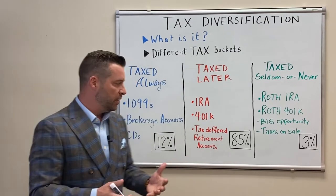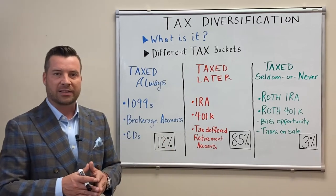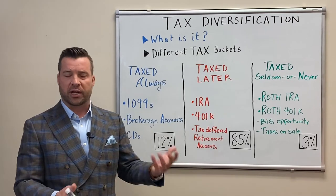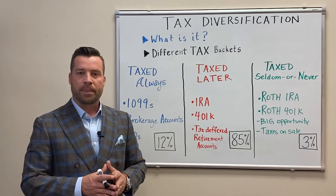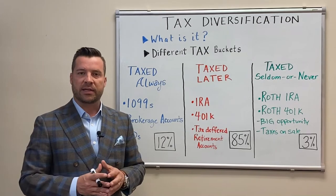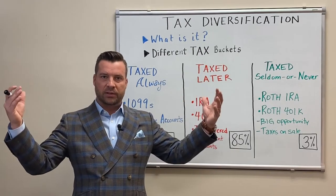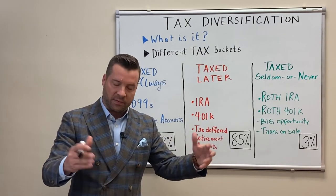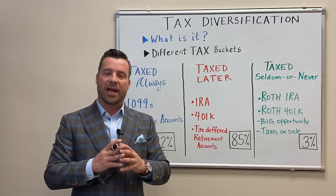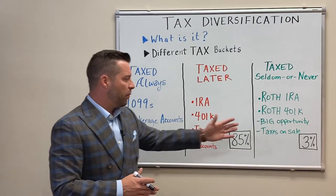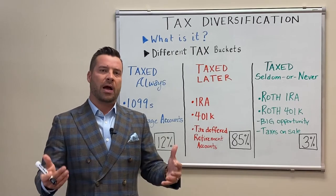I did an analysis to see where most of their money fell. About 12 percent fell into the 'taxed always' bucket — cash, brokerage accounts, CDs, things like that. Then 85 percent fell into the 'taxed later' bucket, where they had been adding money into pre-taxed accounts. Over 30 or 40 years, they may have saved on $100,000 worth of contributions, but now it was worth $700,000 or a million — and now they owe tax on that amount. Only about 3 percent fell in the 'taxed seldom' or 'taxed never' bucket.